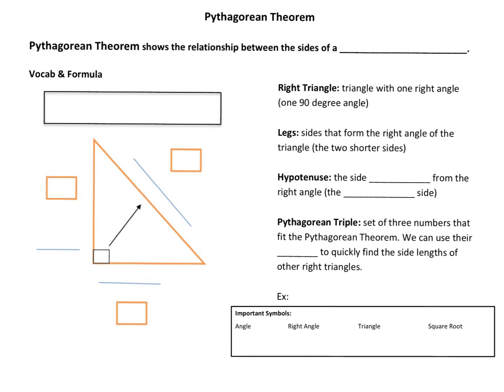The Pythagorean Theorem shows the relationship between the sides of a right triangle. In the box on the top, we're going to write the formula for the Pythagorean Theorem, and then we will look at this more closely with some examples. The formula for the Pythagorean Theorem is a² + b² = c². This theorem applies to right triangles. As a reminder, a right triangle is a triangle that has one right angle, and we know that right angles measure 90 degrees.